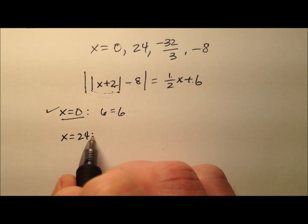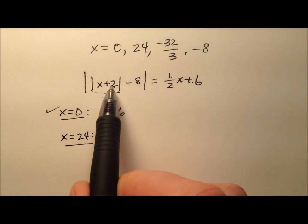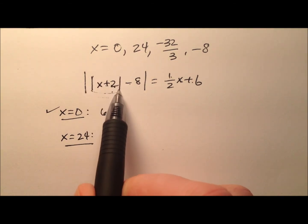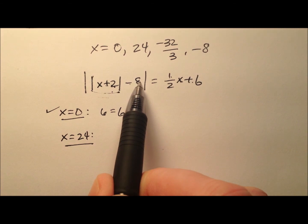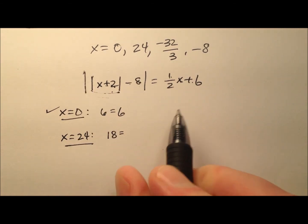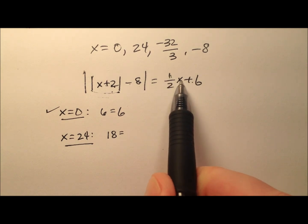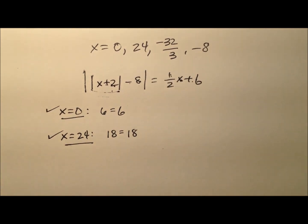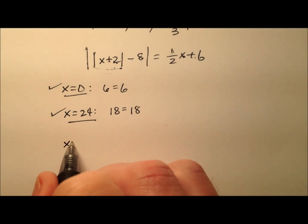Let's try x equals 24: 24 plus 2 is 26, absolute value is 26, minus 8 is 18, absolute value is 18. On the right side, half of 24 is 12, and 12 plus 6 is 18. That one works as well.